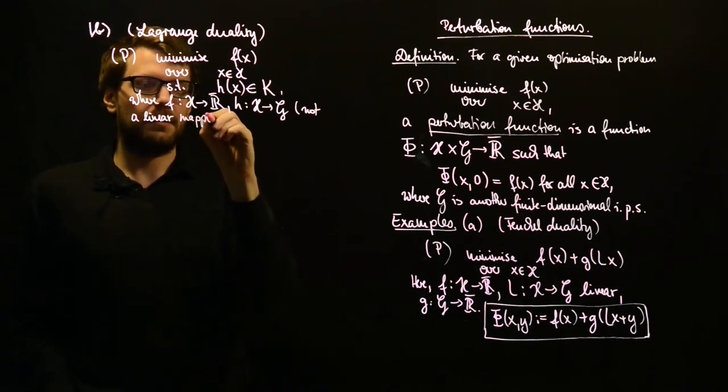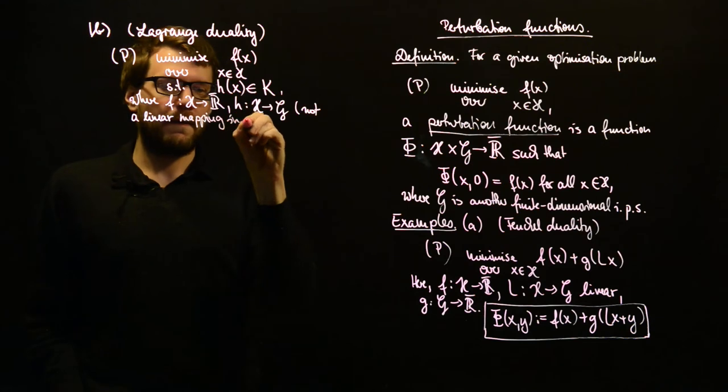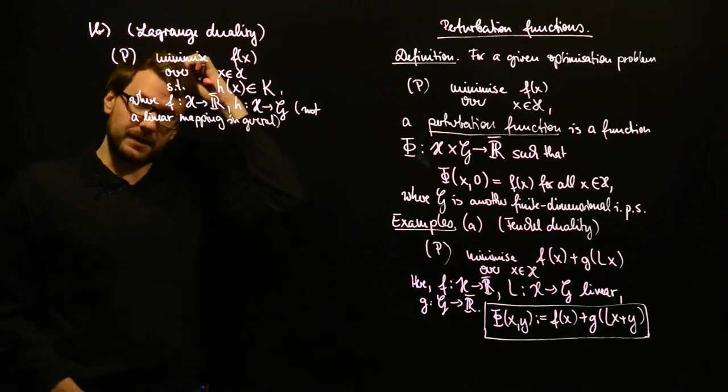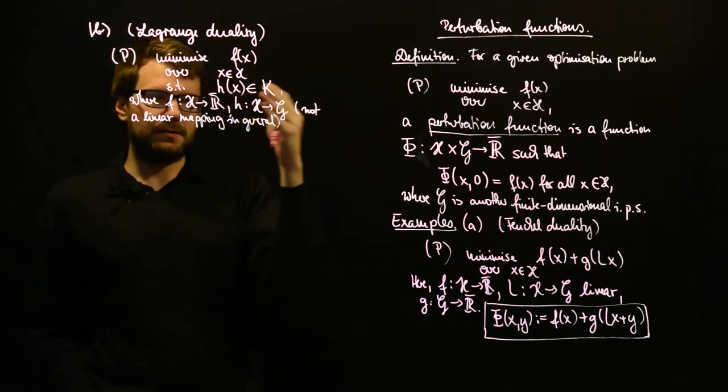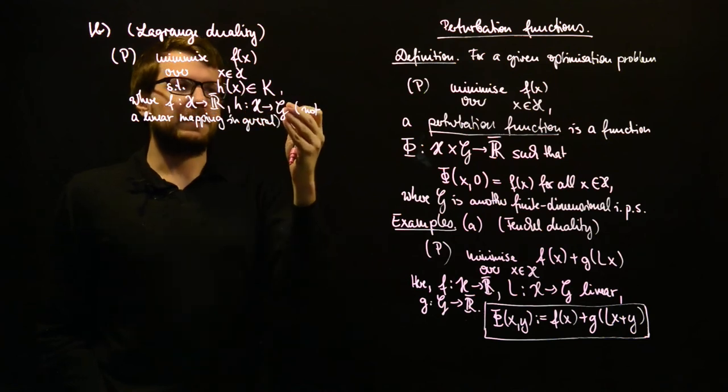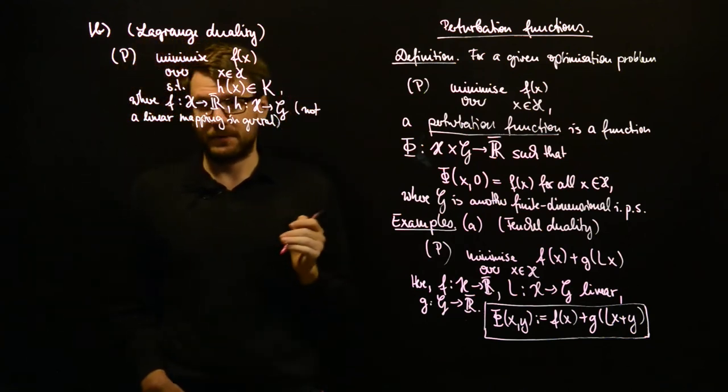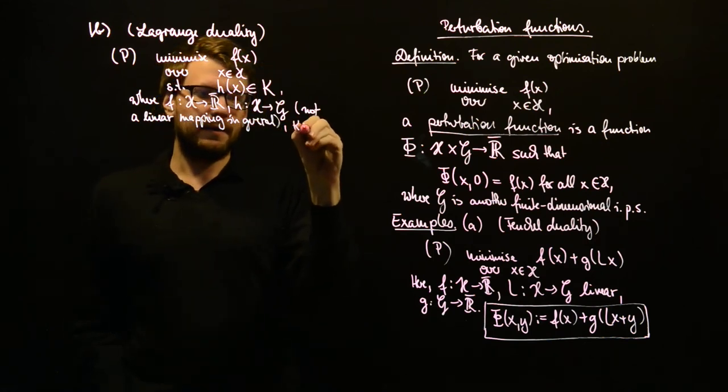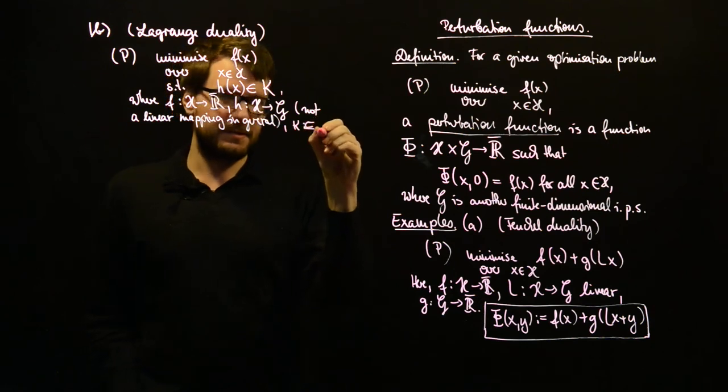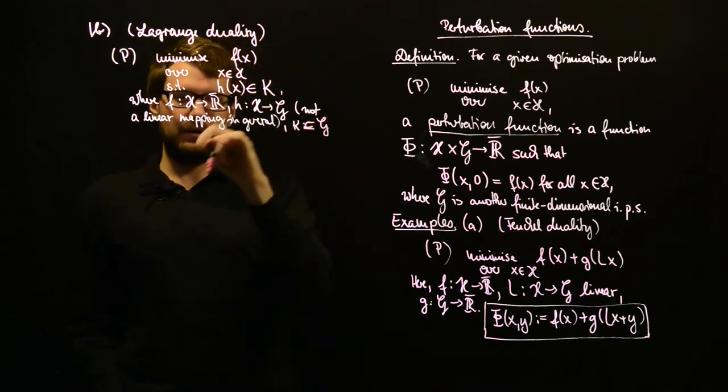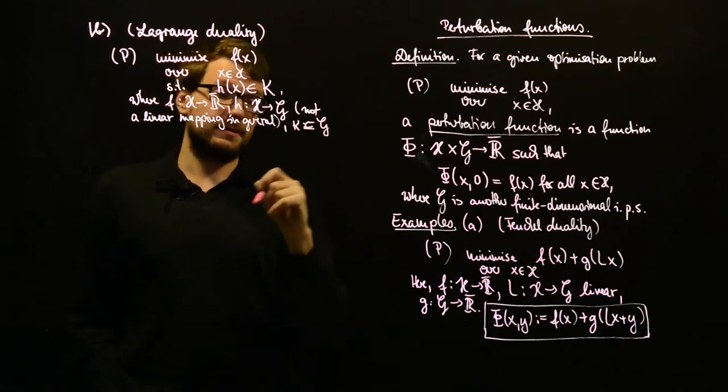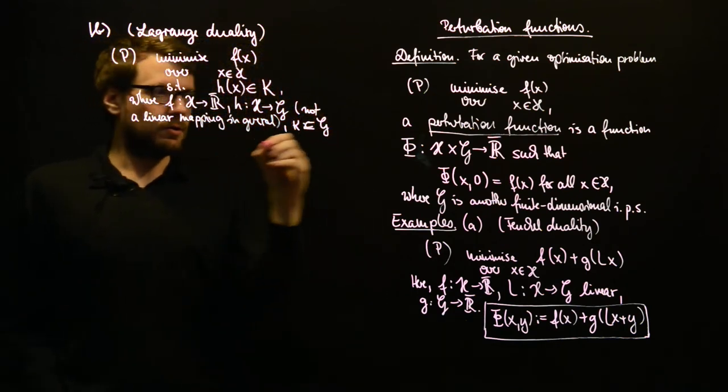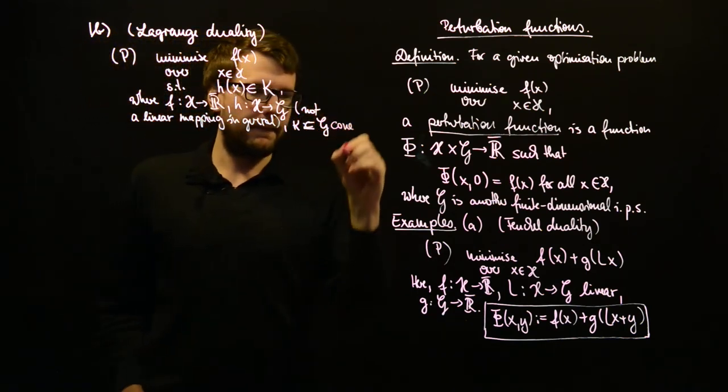I mean, it can be a linear mapping, but it doesn't have to. Instead, this will be a convex function with respect to the cone K, in fact. And K is a subset of G of the image space of h. So, K is a subset of G and this is a cone.